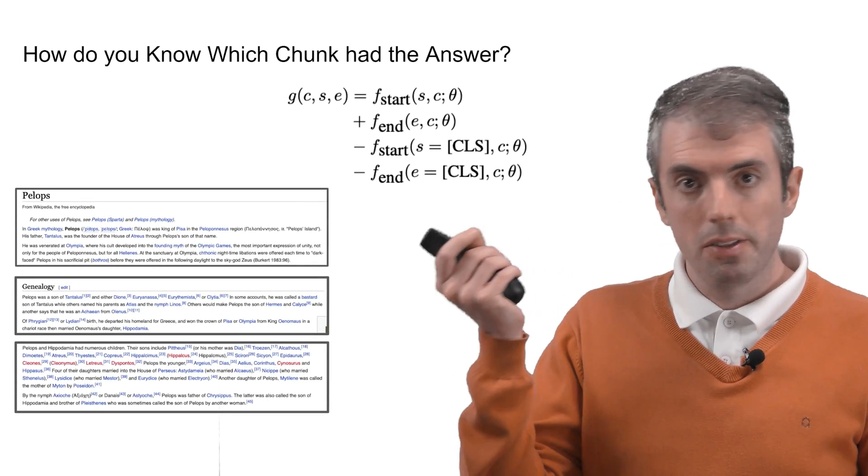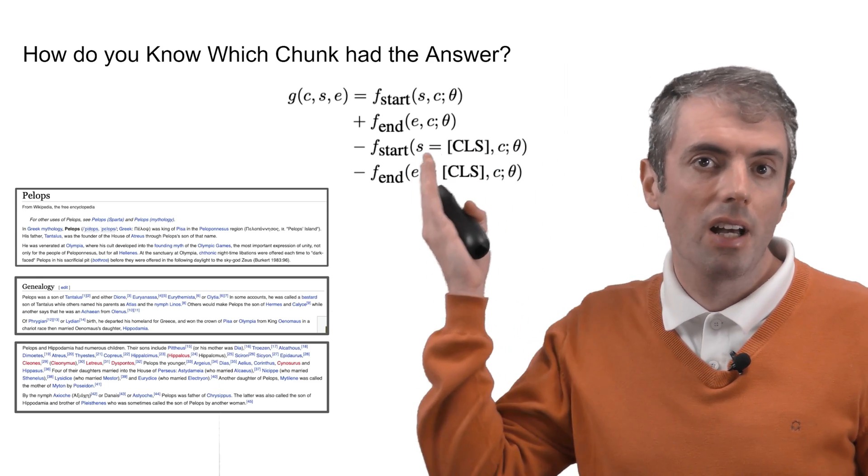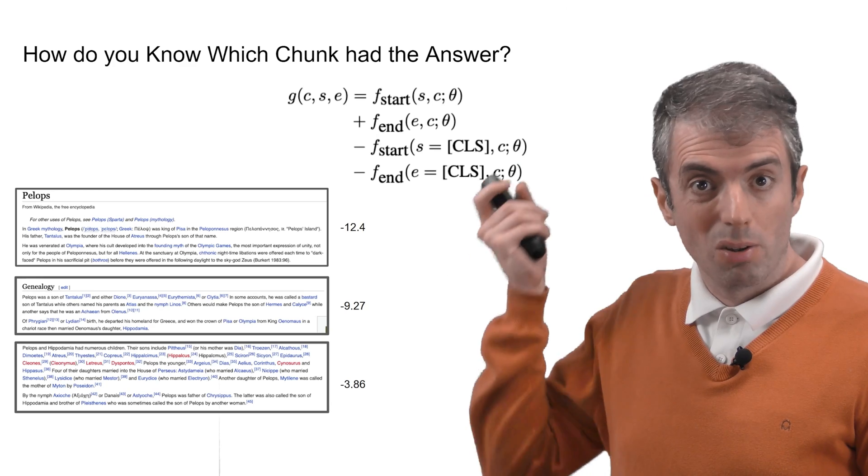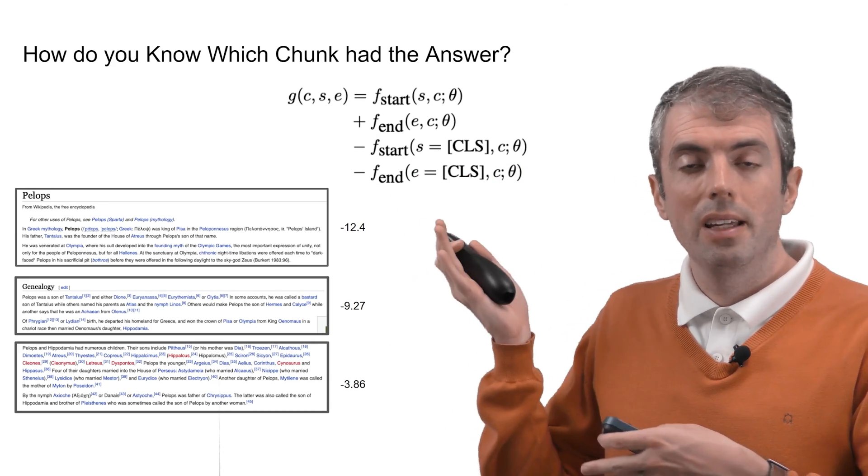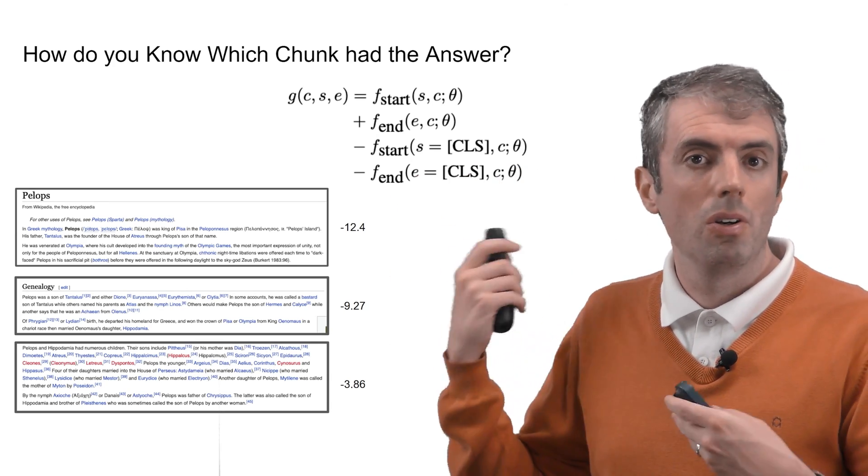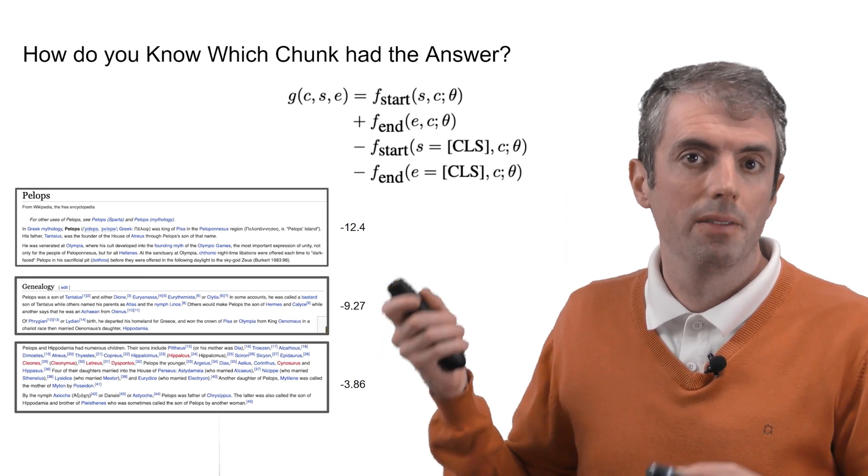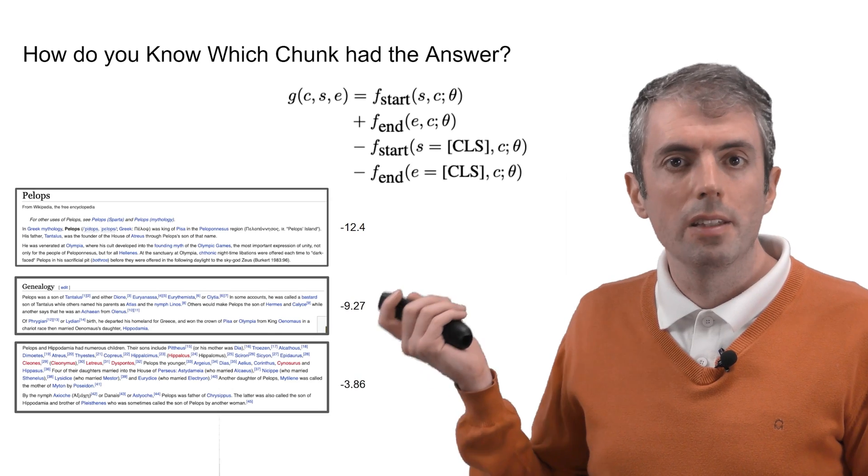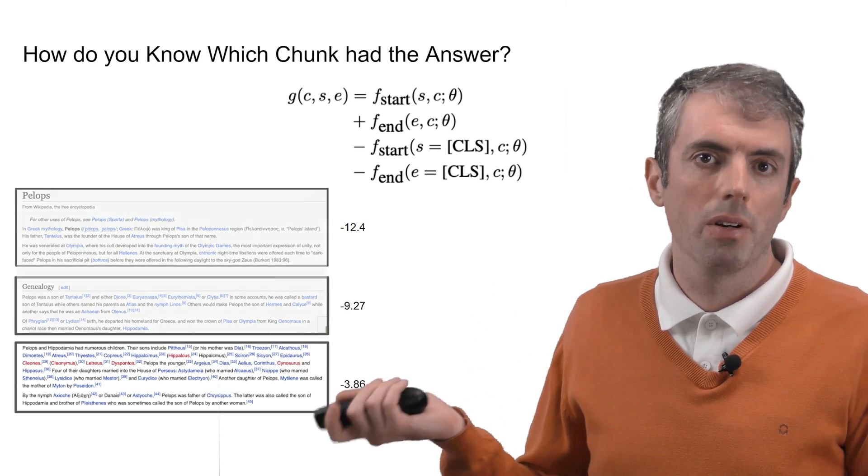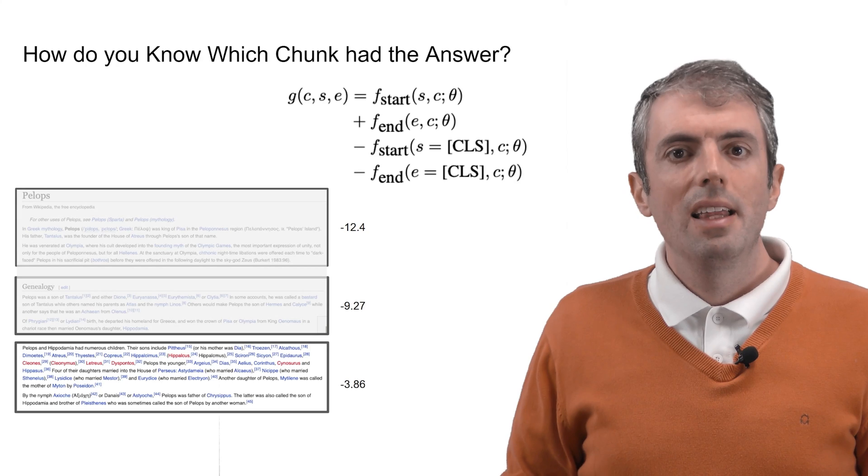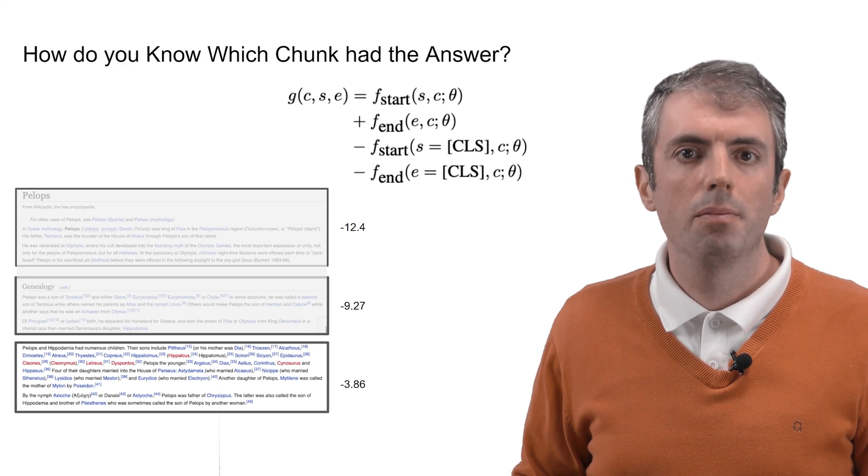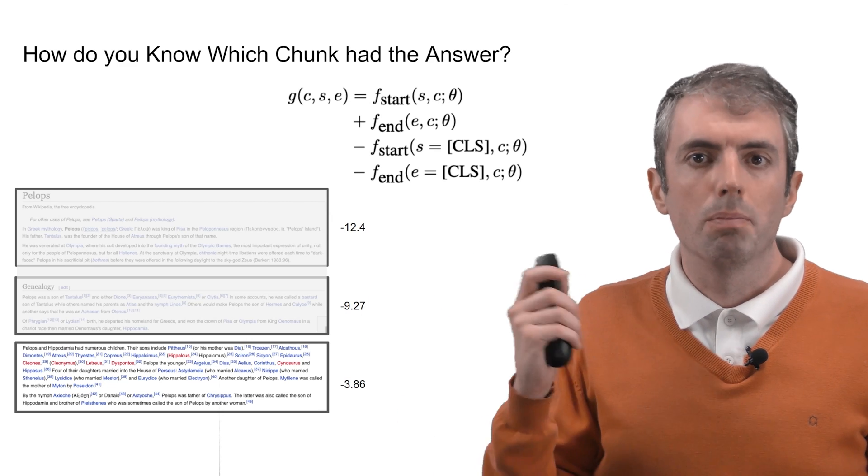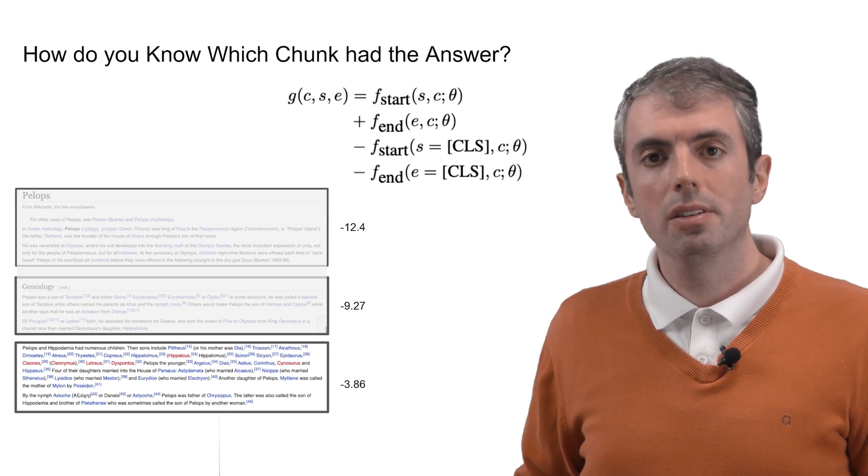So if you get an answer span candidate from each of the retrieved passages, you look at the score G. Let's say that we're looking for the answer to the question, who is the father of Chrysippus? Then we can take a look at the score for each of the spans and take the answer from the third piece of evidence. This is the approach taken by Kwiatkowski et al. in their BERT-based model for answering natural questions.